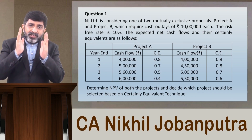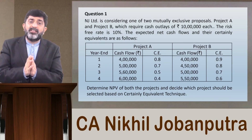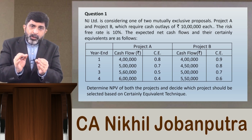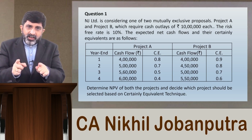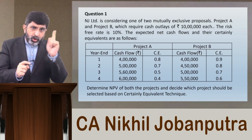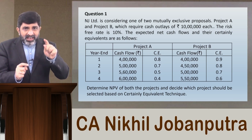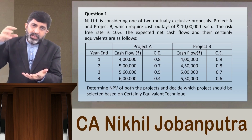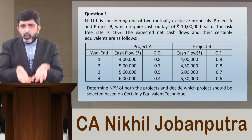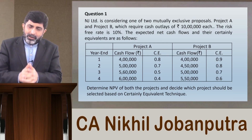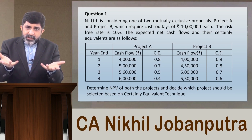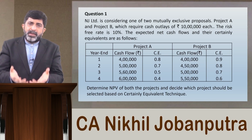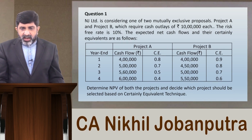Multiplying the certainty equivalent factors to the uncertain cash flows gives you CECF — cash flows free from the uncertainty factor, though we call them certainty equivalent rather than certain. Then convert CECF to present values using the risk-free discounting rate, not RADR. Add a column for PV factors at 10% and compute the PV of CECF. Subtract the cost of the project to get NPV.